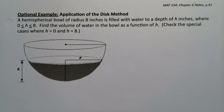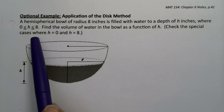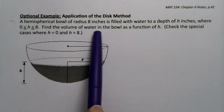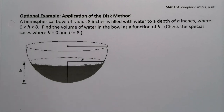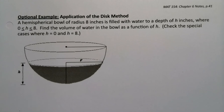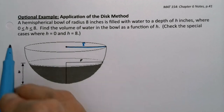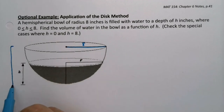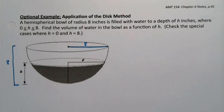In this example we want to apply the disk method to a more difficult problem. It's quite tricky in terms of its limits of integration. We have a hemispherical bowl — hemisphere means half of a sphere. Imagine a big globe, but we're only looking at the bottom half of it, and we're filling it with water starting at the bottom. The bowl has a radius of 8 inches — that's the radius of the bowl itself, not the radius of the water.